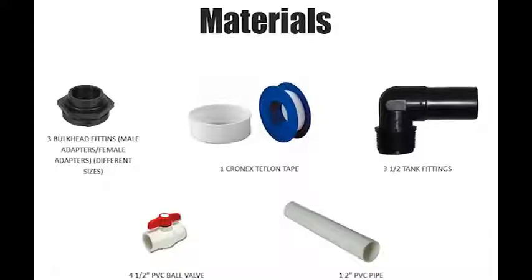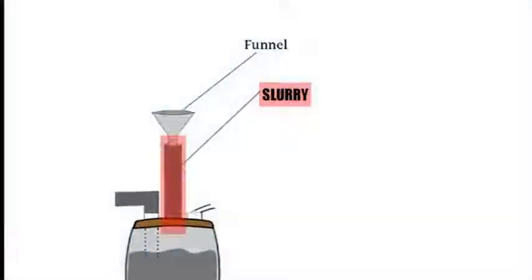First of all, you cut a hole in the middle on top of barrel one. This hole will be the inlet for the slurry or waste material.